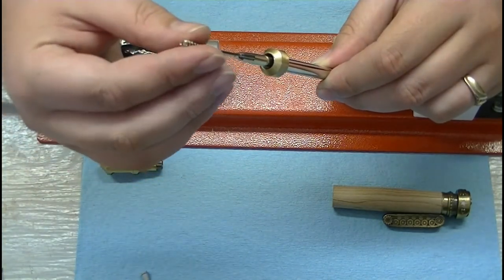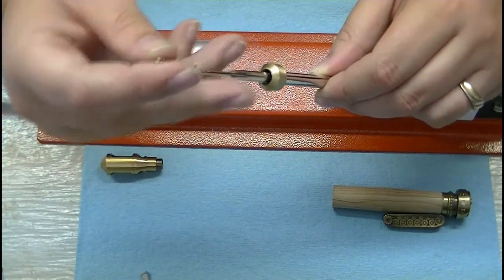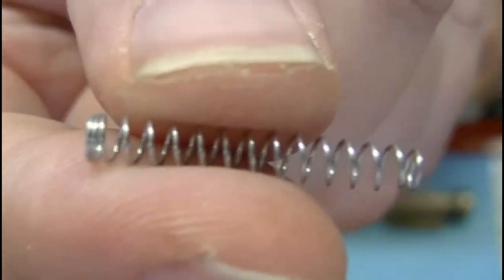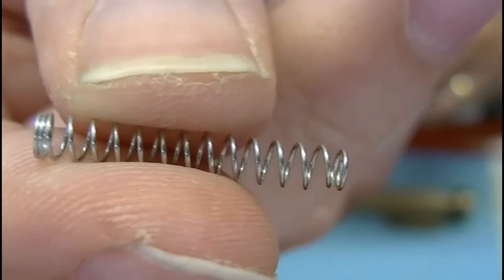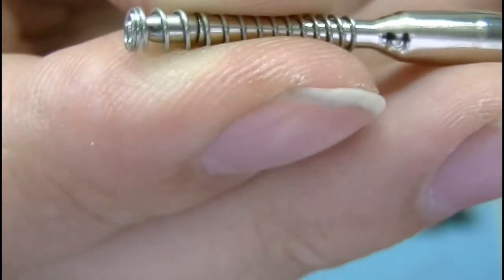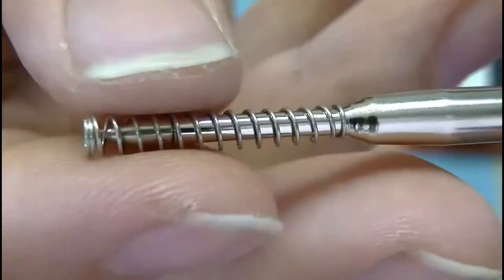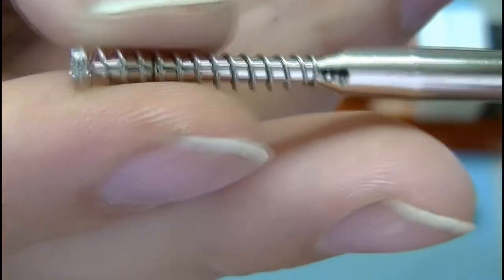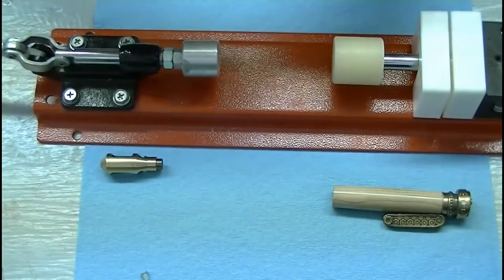Place our spring onto our shaft. Now there's a little section here that's just slightly smaller than the other end, so this end here is slightly smaller. So we put that onto our refill, like so, and you see how it pushes on there and now it kind of sticks on that in place like that.